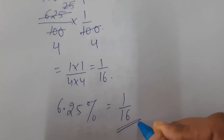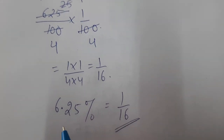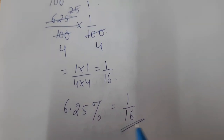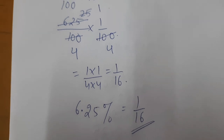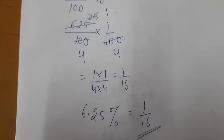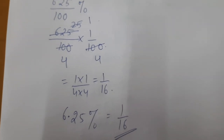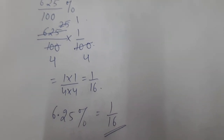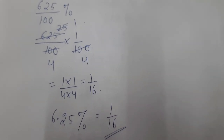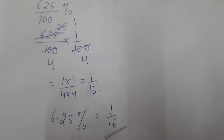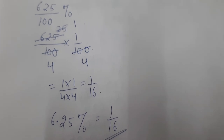So 6.25 percent is equal to 1 upon 16. In lowest terms, we write 6.25 percent as 1 upon 16. This completes question number five of Exercise 12A.